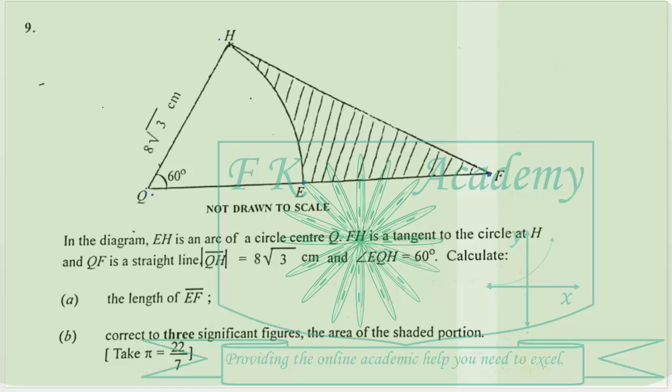Question number 9 says: in a diagram, EH is an arc of a circle with center Q. FH is a tangent to the circle at H, and QF is a straight line. The length of line segment QH is equal to 8 root 3 centimeters, and angle EQH is equal to 60 degrees. Calculate the length of line segment EF.